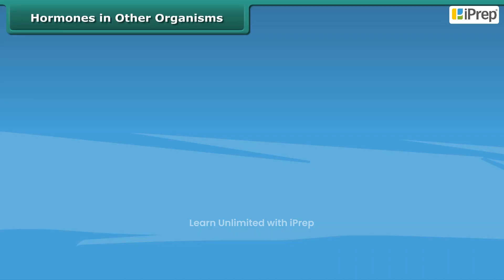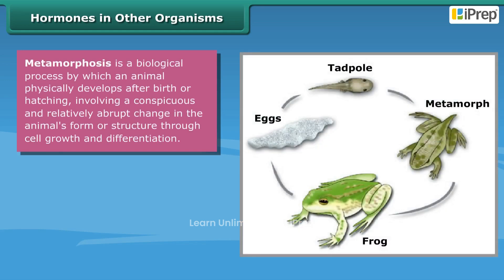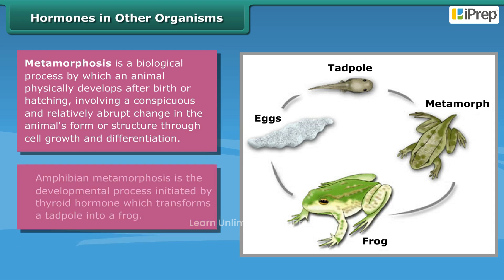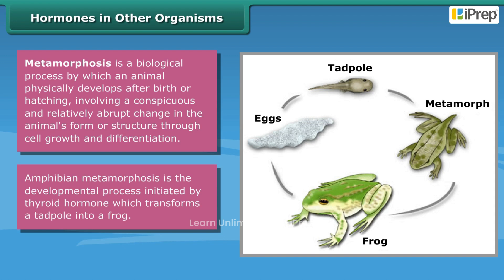Metamorphosis is a biological process by which an animal physically develops after birth or hatching, involving a conspicuous and relatively abrupt change in the animal's form or structure through cell growth and differentiation.